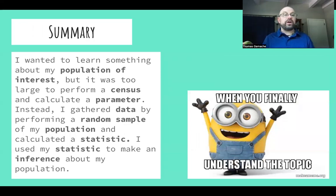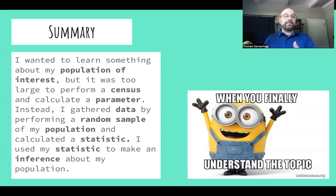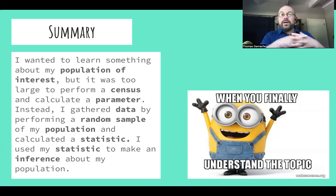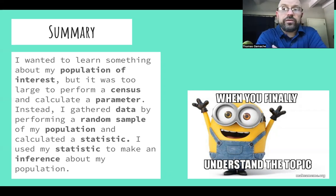In conclusion: if your population of interest is too large to perform a census and calculate the parameter, gather data by performing a random sample and calculate a statistic, then use that statistic to make an inference about your population. If you had a smaller population of interest, you could perform a census, calculate a parameter, and come up with a summary and conclusion for your entire population. This is all very important vocabulary you're going to be using throughout the year, so feel free to revisit this video for different examples and to review the vocabulary.